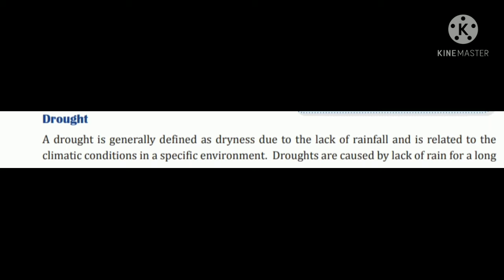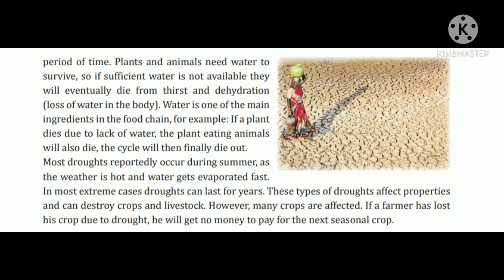Drought. A drought is generally defined as dryness due to the lack of rainfall and is related to the climatic condition in a specific environment. Droughts are caused by lack of rain for a long period of time. Plants and animals need water to survive, so if sufficient water is not available, they will eventually die from thirst and dehydration, which means loss of water in the body.